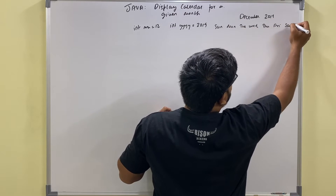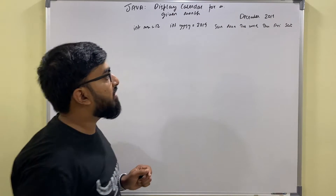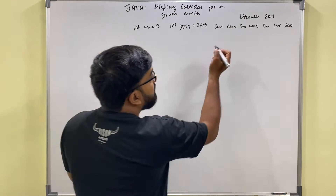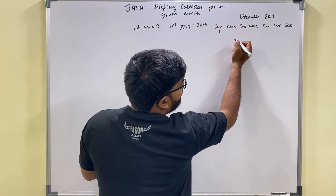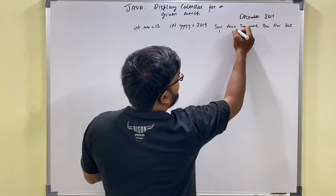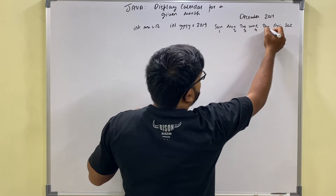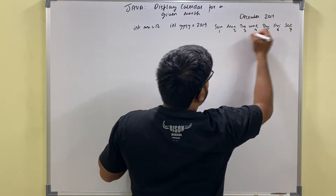The calendar shows Monday, Tuesday, Wednesday, Thursday, Friday, and Saturday. For December 2019, the first day was on Sunday — date one was on Sunday, Monday, Tuesday, Wednesday, Thursday, Friday, Saturday.